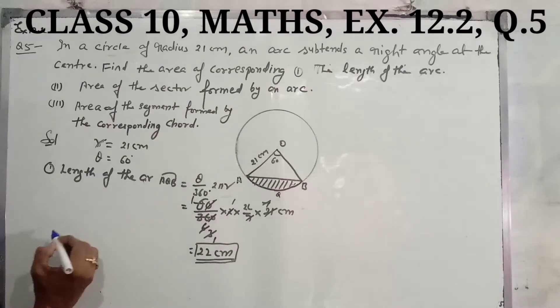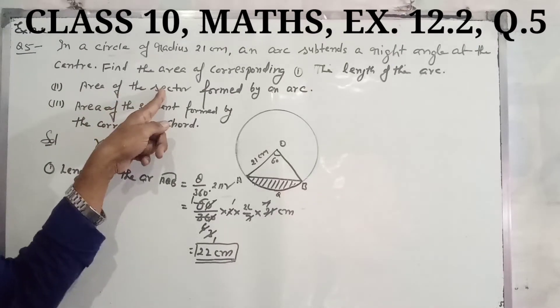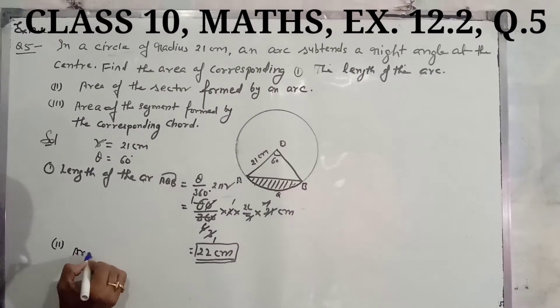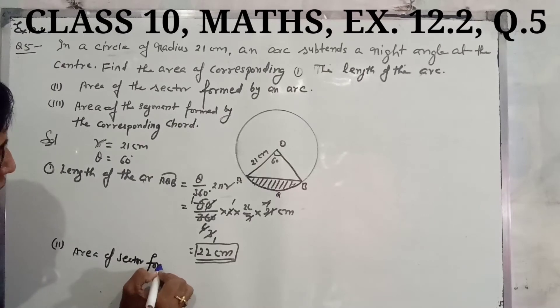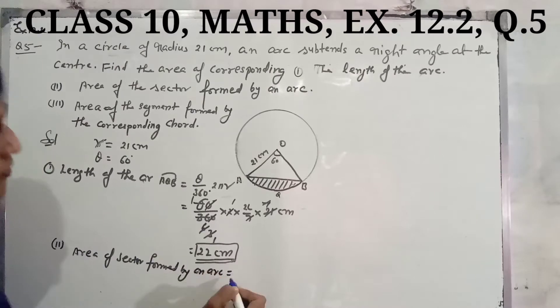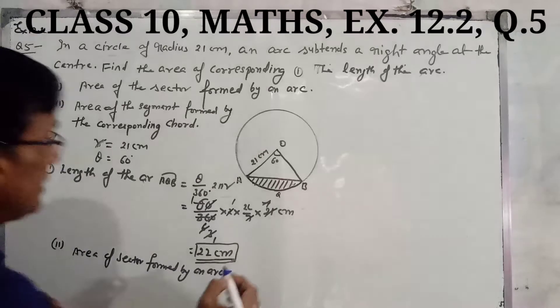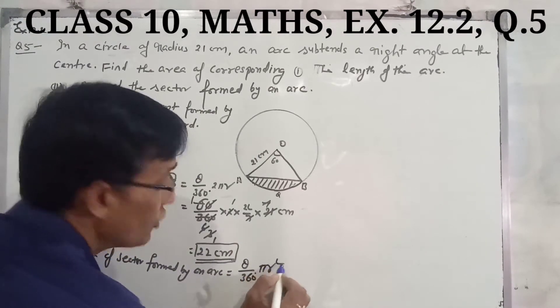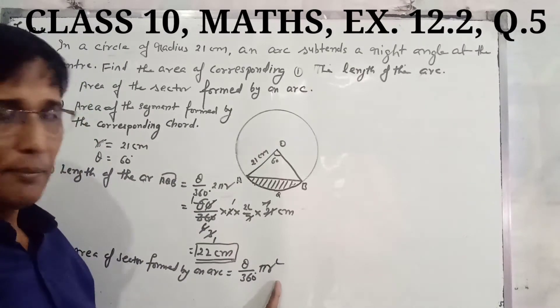Second, we have to find the area of the sector formed by an arc. What is the formula? Area of sector is theta upon 360 degree multiplied by pi r square.